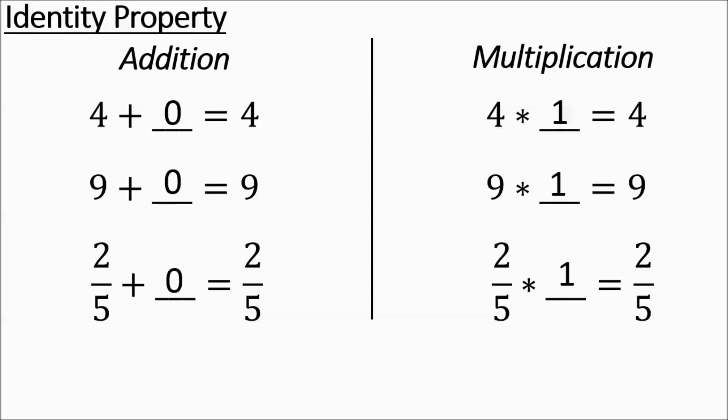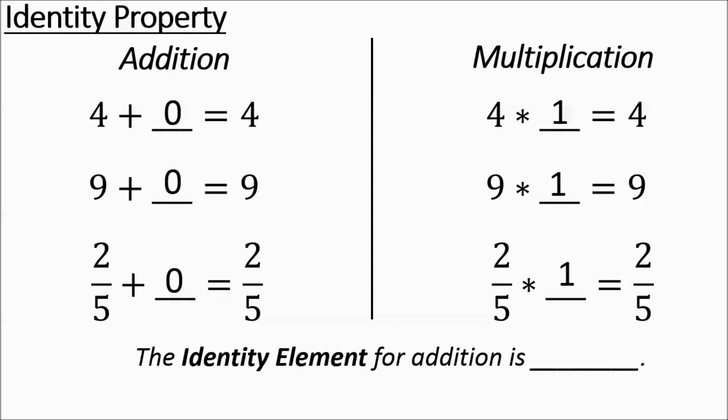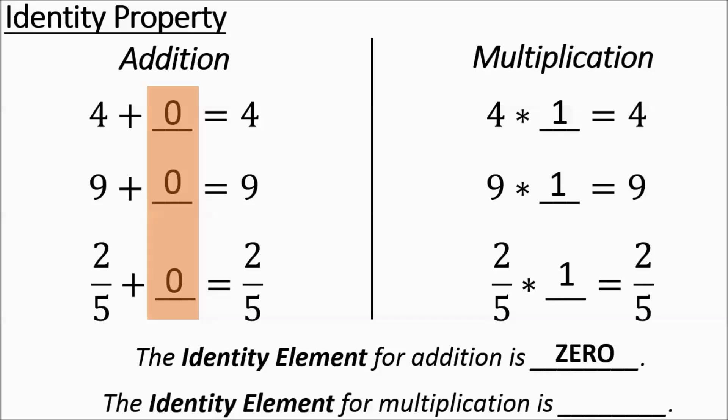So you can either add 0 or multiply by 1 to get the same number. The identity element for addition — that thing you're adding to the number to get the same number — is going to be 0. The identity element for multiplying — what you can multiply a number by to get the same number — is going to be 1. Identity element for adding is 0; identity element for multiplying is 1.